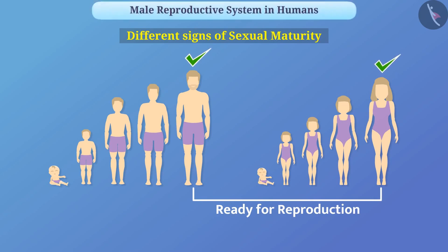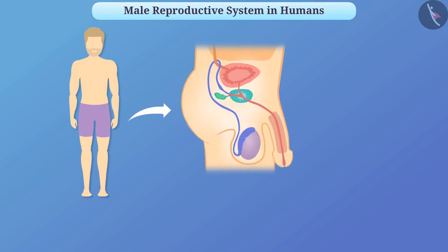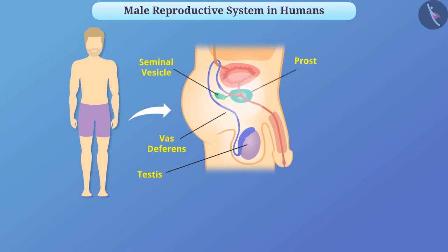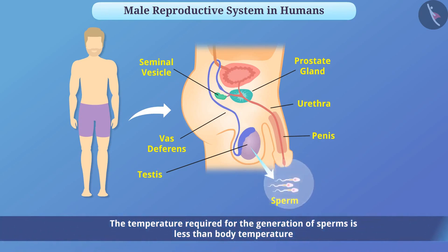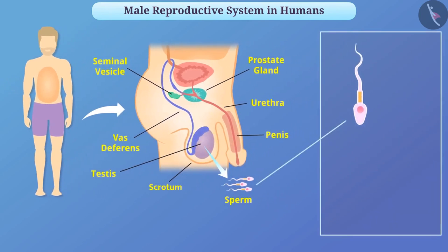The male reproductive system in humans consists of a pair of testes, the seminal vesicle, the vas deferens, the prostate gland, the urethra, and the penis. Each testes produces male germ cells called sperm. Since the temperature required for sperm generation is less than body temperature, the testes are located outside the abdominal cavity in the scrotum. A sperm is a microstructure containing genetic material and a long tail that allows it to move in the female reproductive tract.